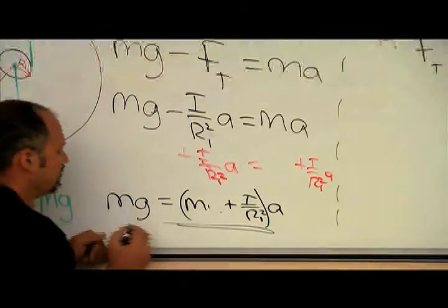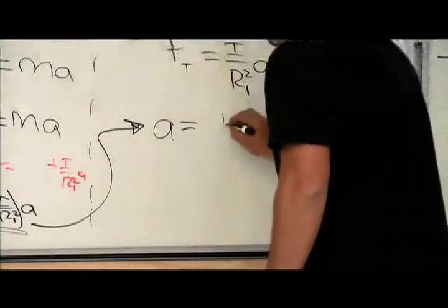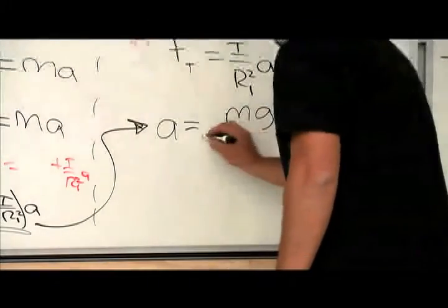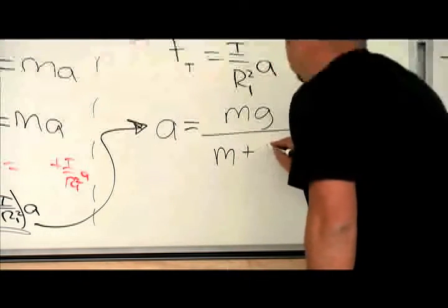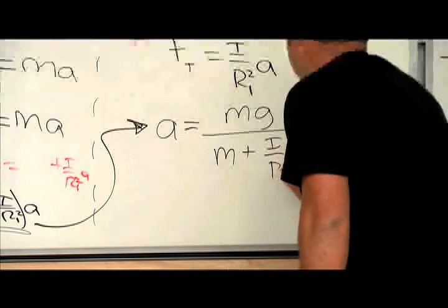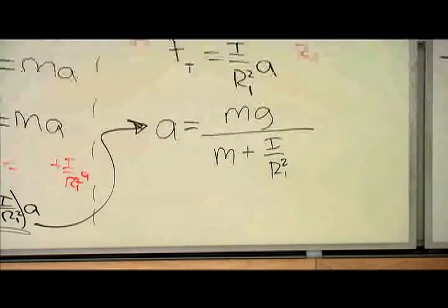Now I'll factor out the a, and if I divide both sides by this guy right here, I get my final expression for acceleration, which is equal to mg divided by m plus i over r1 squared, and that's my acceleration.